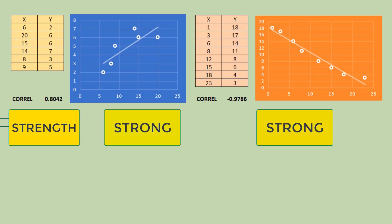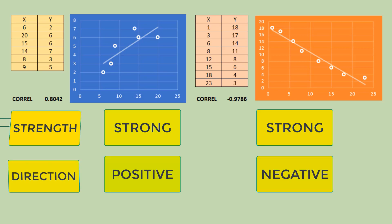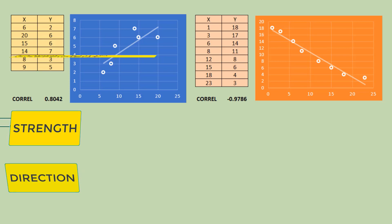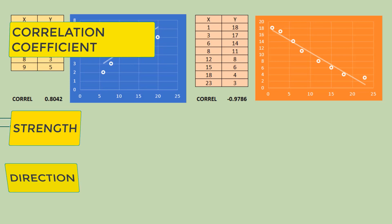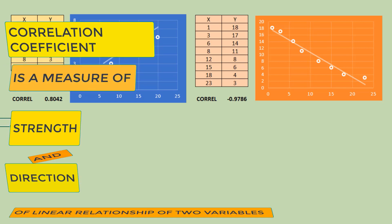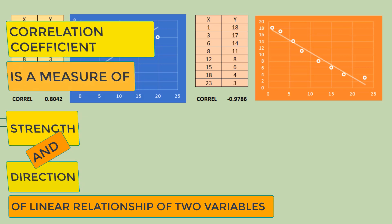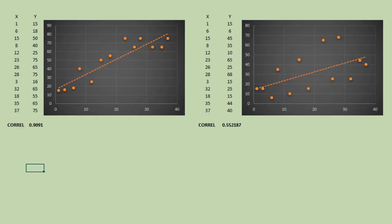The only difference is their direction. One is positive and the other one is negative. So that's why the correlation coefficient is a measure of strength and direction of linear relationship between two variables.